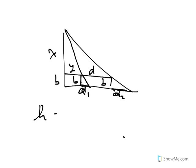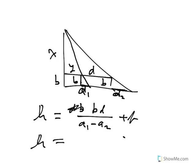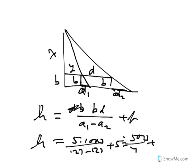Here's Liu Hui's formula. It's b times d over a1 minus a2, and then plus b at the end. In our situation, it's 5 times 1,000 over 127 minus 123 plus 5, which is 5,000 over 4 plus 5, which is 1,255.